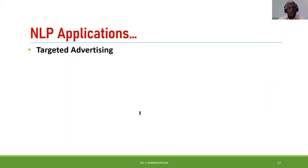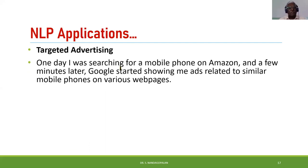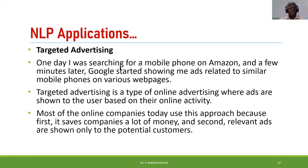Another application is targeted advertising. Whenever you browse the internet or visit Amazon or Flipkart, after some time you see products on the side — things you have already browsed. It's not showing everything randomly; it is targeted based on what you have already searched. Earlier search keywords are used by systems like Google to show you things you may be interested in.